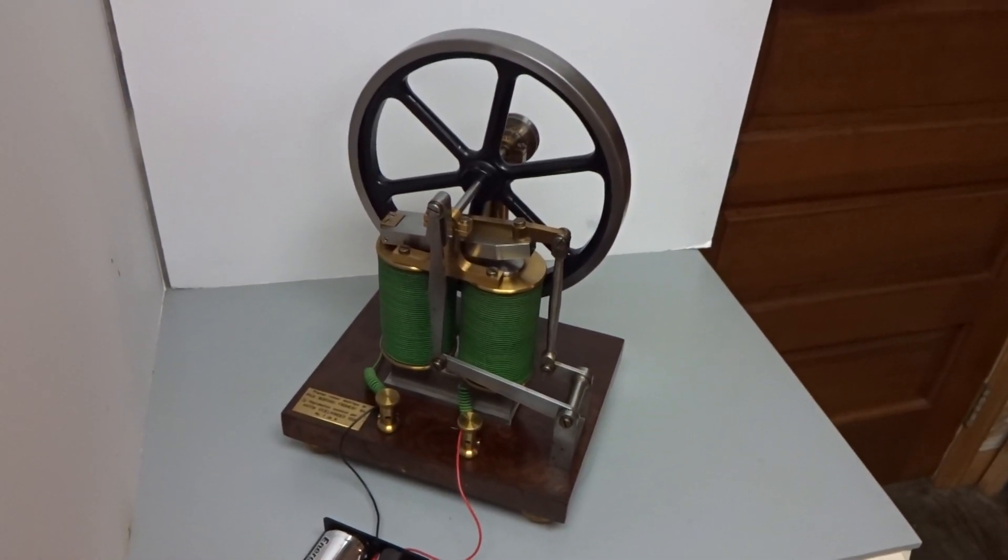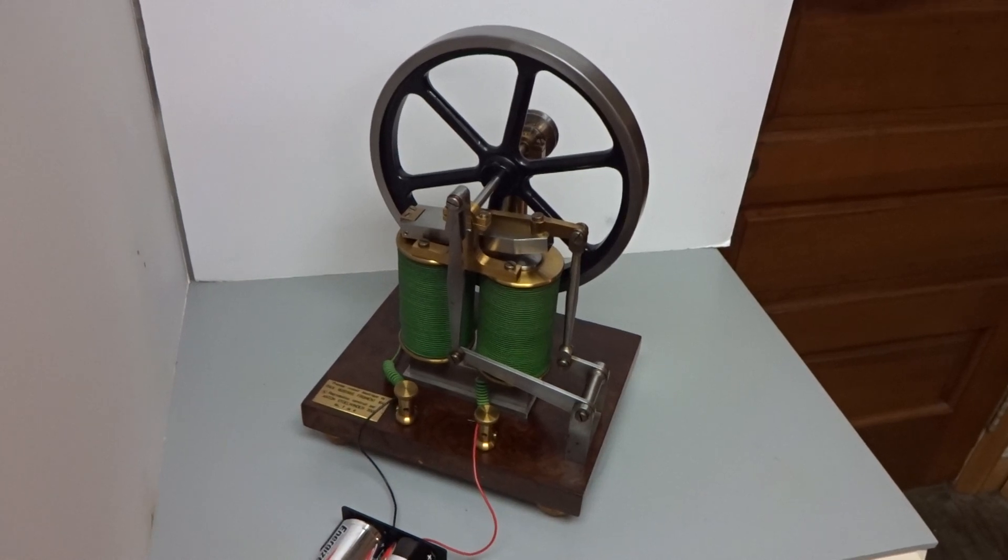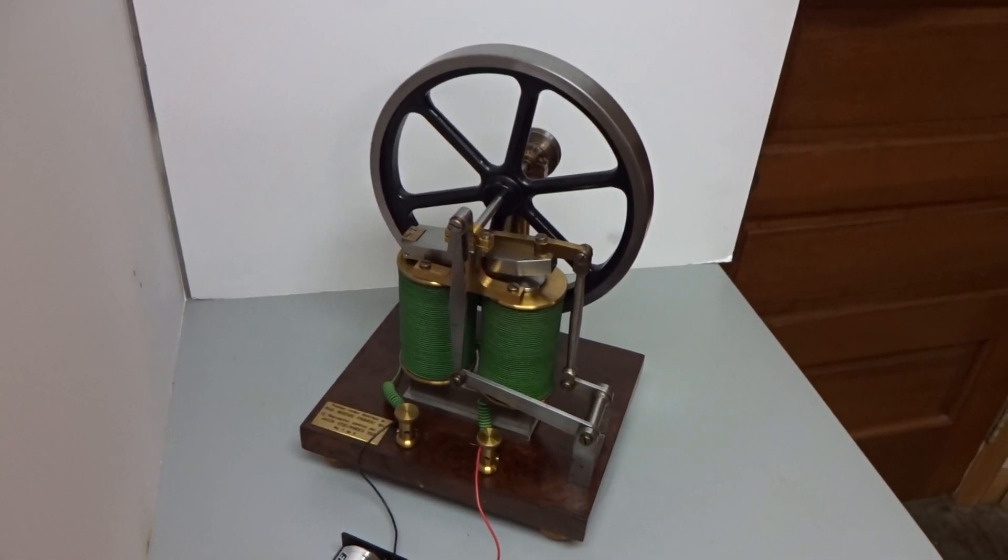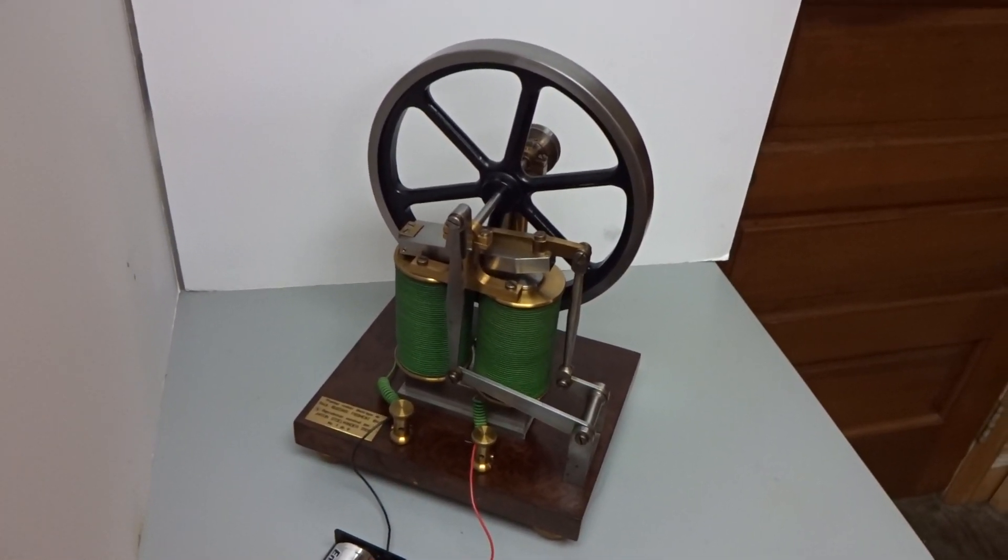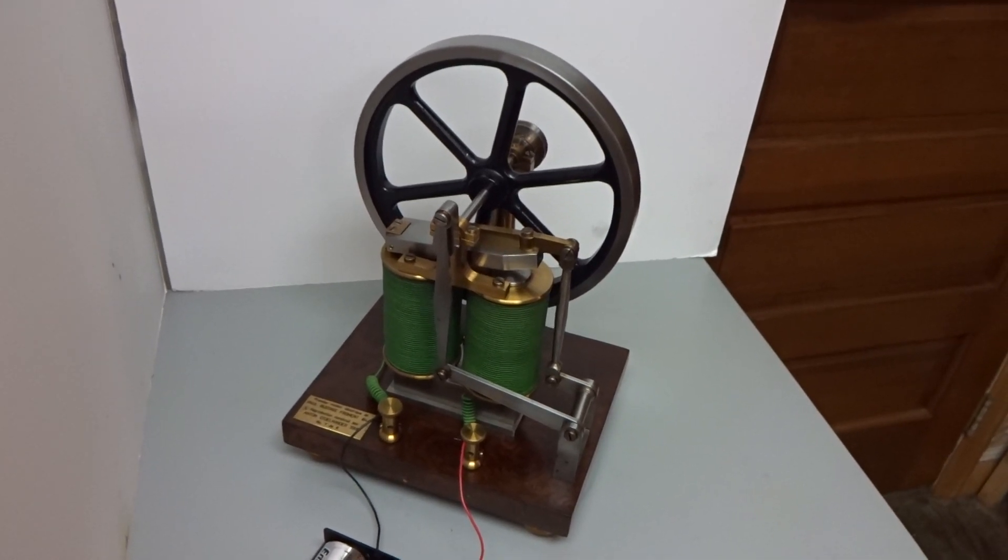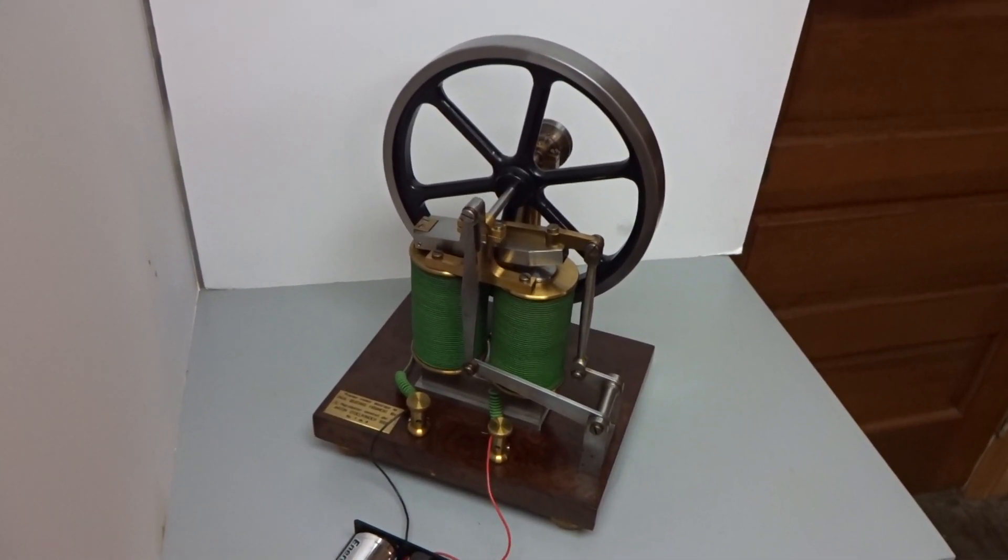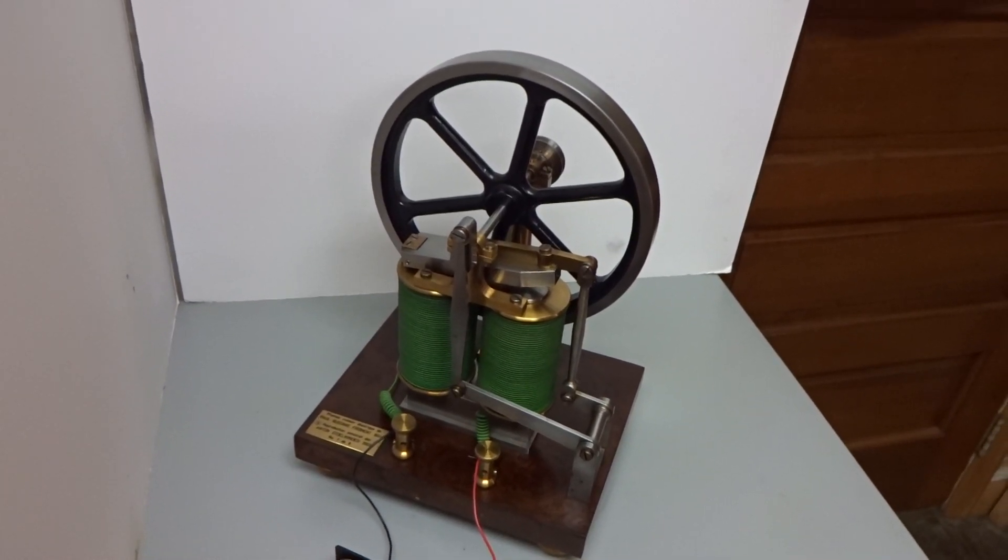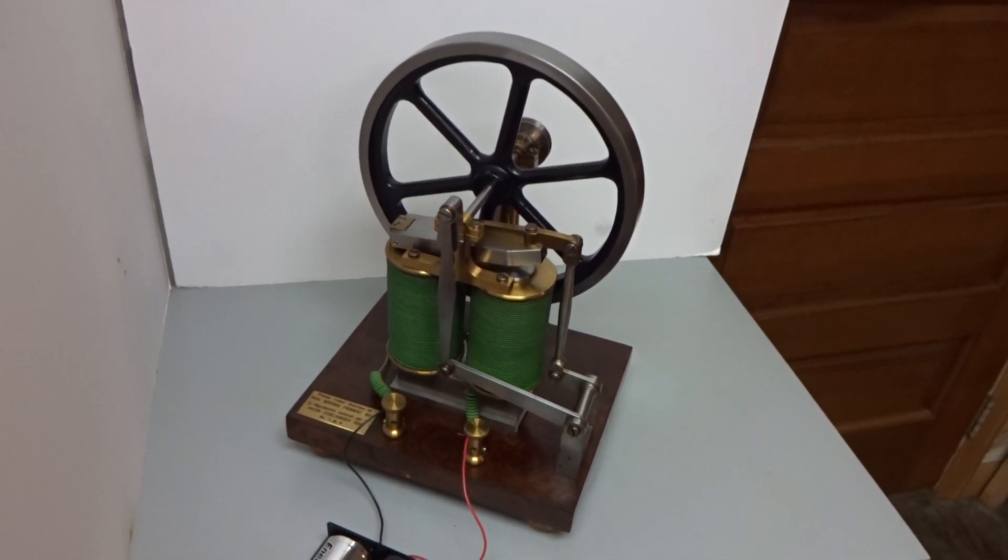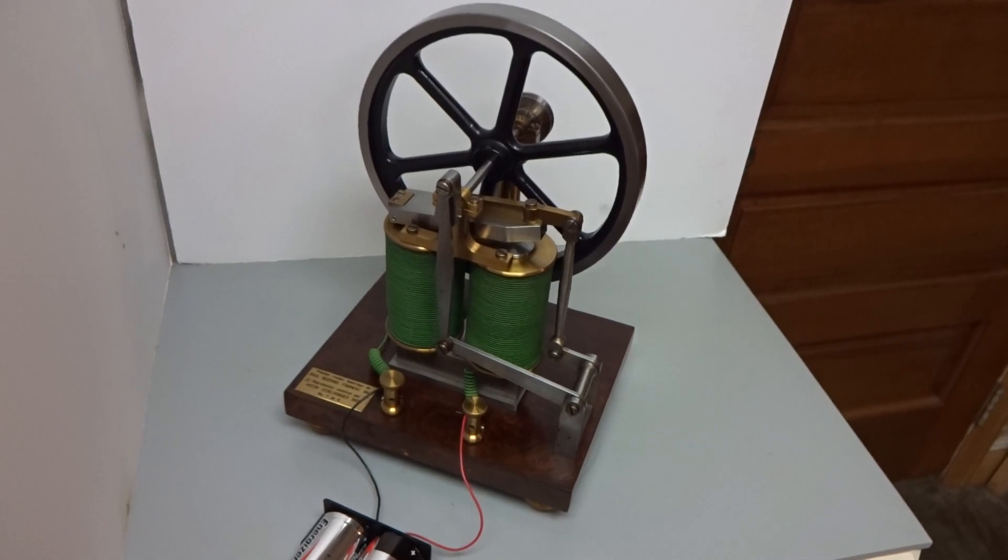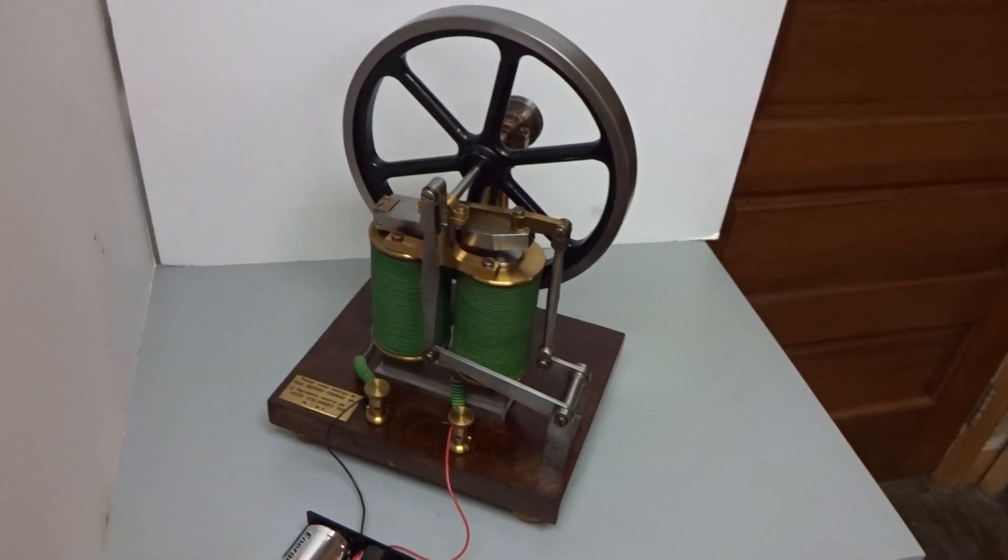It is a reproduction of an electric motor built by Paul Gustav Froment in 1844. This reproduction was made by Anton Stollwinder in 2009 and it is number seven of eight produced.